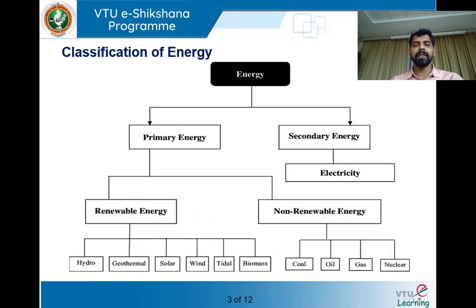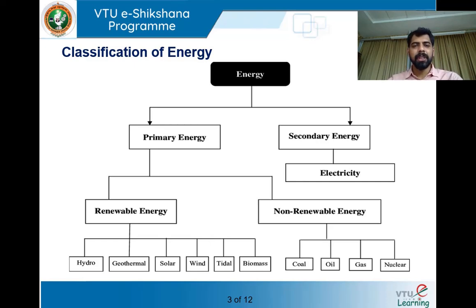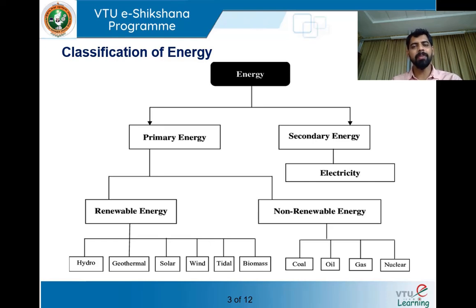Moving further, let us look at the classification of energy based on where we derive it. Basically, we classify it into primary energy and secondary energy. We will be concentrating only on primary energy because secondary energy by default is electricity, and electricity is not available in the raw form — it has to be converted from some other form. Primary energy is what is available in the raw form.